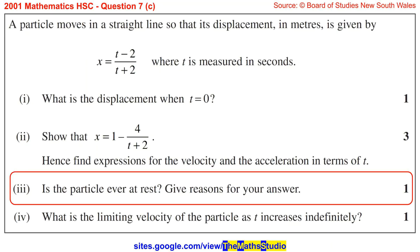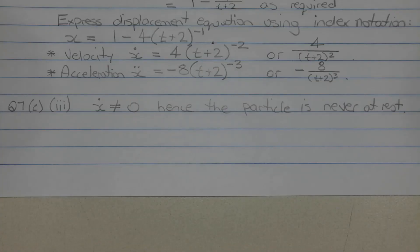Part 3. Is the particle ever at rest? Give reasons for your answer. The particle is at rest if x dot or the velocity of the particle at any point in time is equal to 0. Consider the velocity equation x dot is equal to 4 over t plus 2 in brackets squared. Now this fraction can never equal 0 for any value of t greater than or equal to 0. And since x dot cannot equal 0 for any value of t greater than or equal to 0, the particle is never at rest.